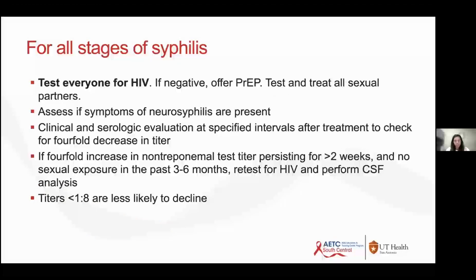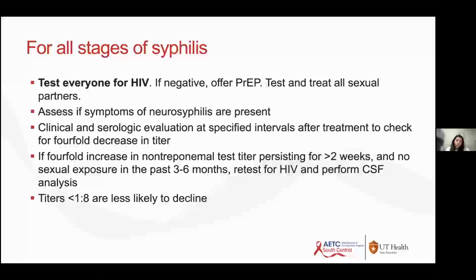For any stage of syphilis, test everybody for other STIs, most importantly HIV. If they test negative for HIV, you can offer PrEP since they tested positive for syphilis. Make sure you test and treat all sexual partners — you are legally allowed to prescribe for partners as well. Assess if everybody who tests positive has symptoms of neurosyphilis, because neurosyphilis can happen at any stage. Once treated, confirm that RPR titers drop to verify treatment was effective.